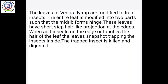Pitcher plant के leaves jug या pitcher के shape में modified होते हैं, जिनका lid open और close होता है। Inner walls में hair-like structures होते हैं जो insect को फँसाते हैं, और bottom में digestive juices होते हैं जो insect को digest करते हैं। Second example है Venus flytrap — जिसके leaves दो parts में divided होते हैं, edges पर hair-like projections होते हैं, और जब insect touch करता है तो leaves बंद हो जाते हैं।